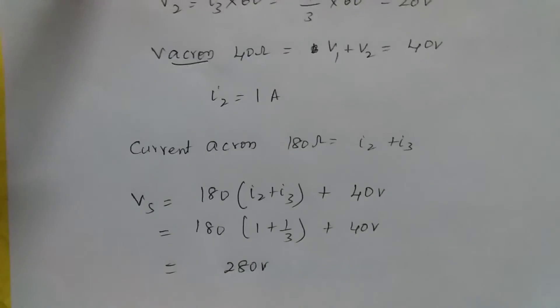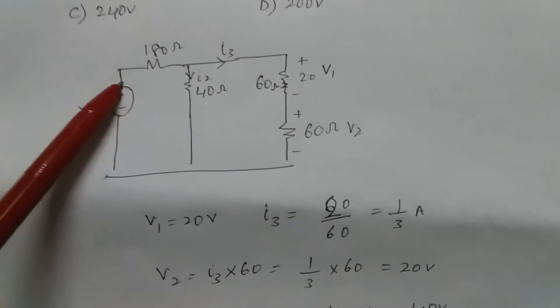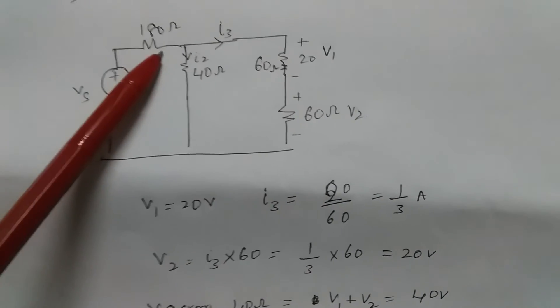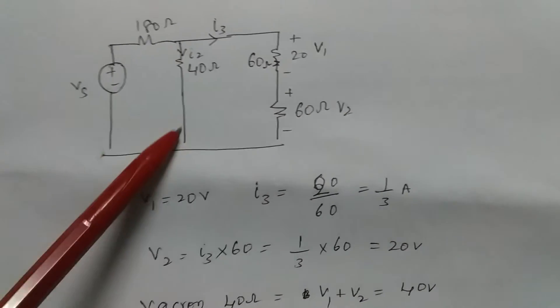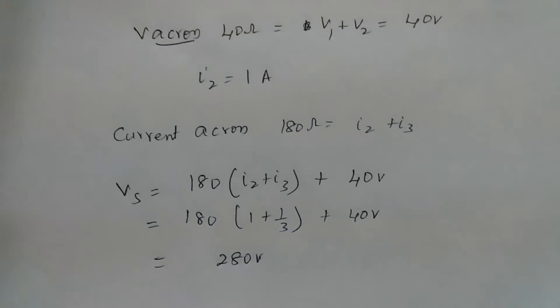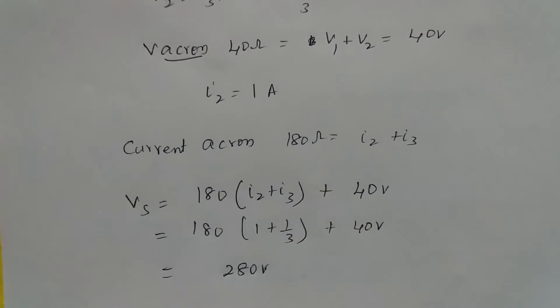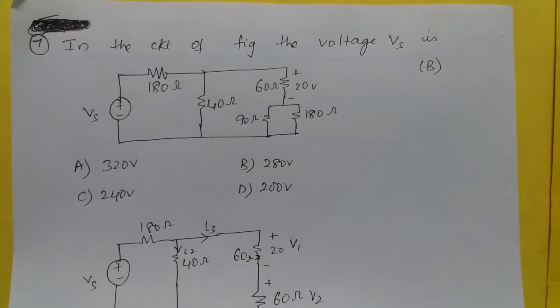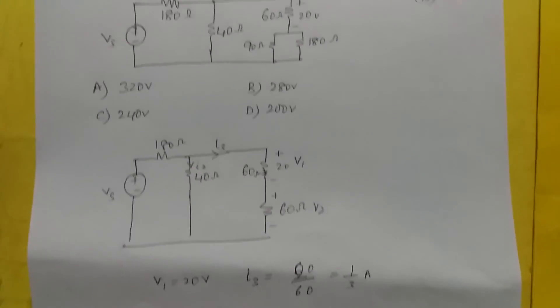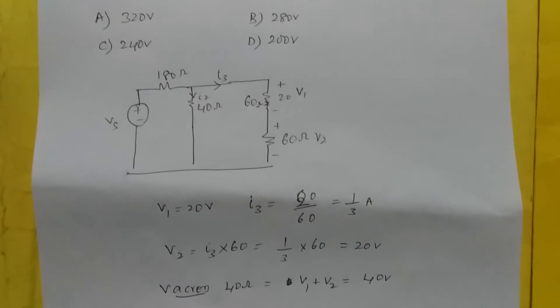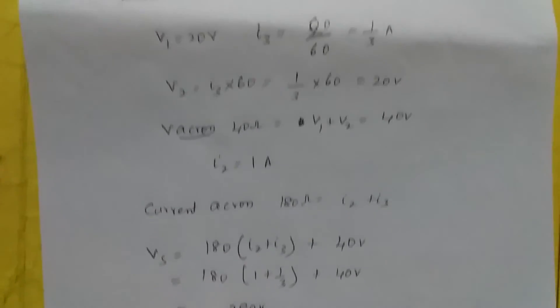Vs equals 180 ohms multiplied by (I2 + I3) plus the 40 ohm drop, giving Vs = 280 volts. The right option is 280. That's all for this session — more in the next session.